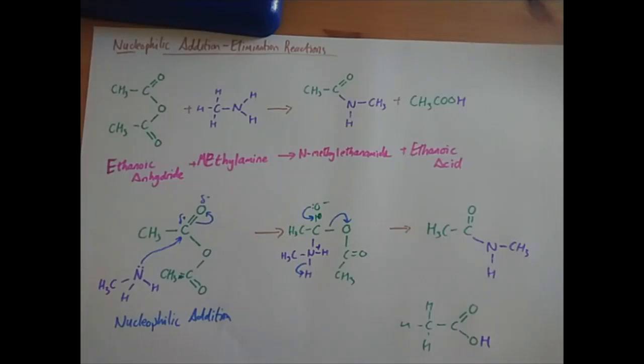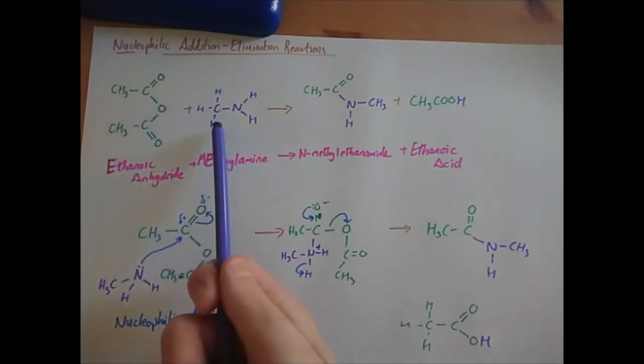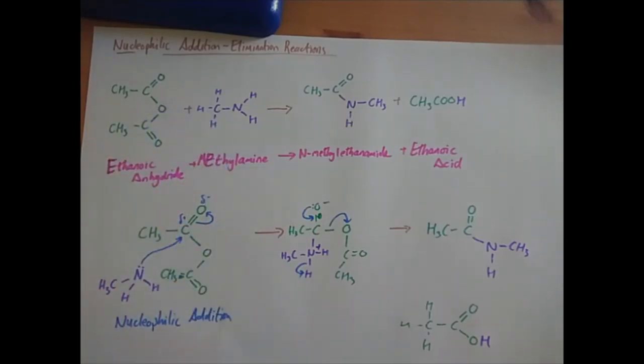So this mechanism is identical to the last one, but rather than having a Cl we've got the ethanoate group, and rather than having an H here you've got a CH3 rather than an H. Simple as that.